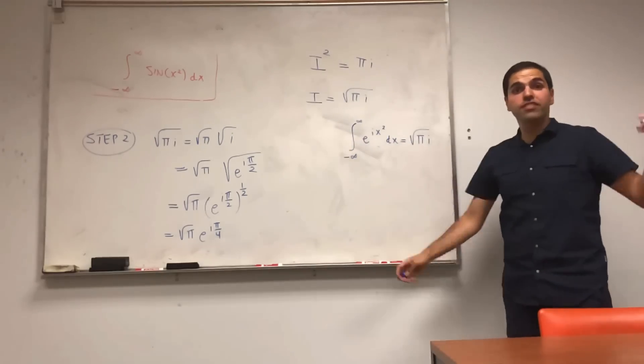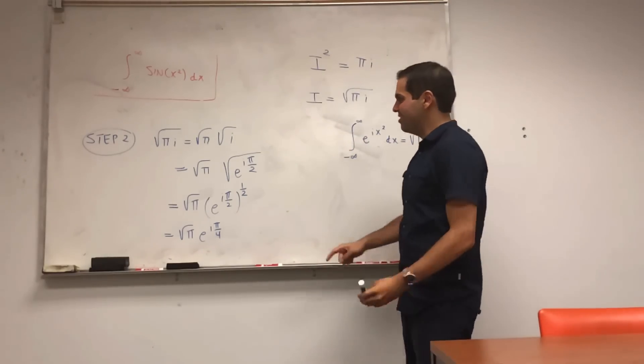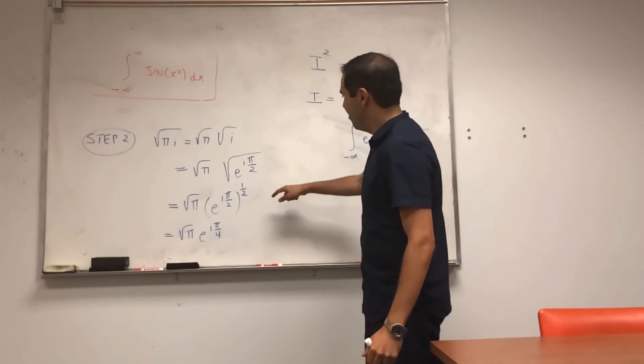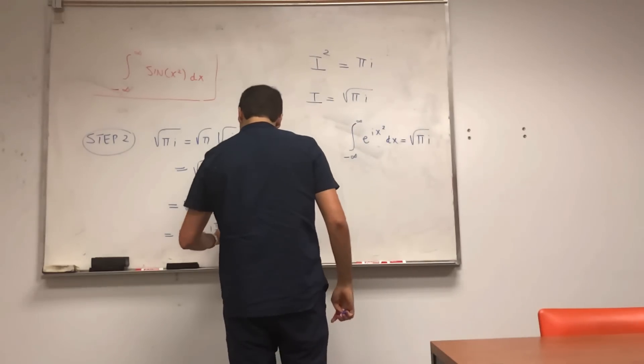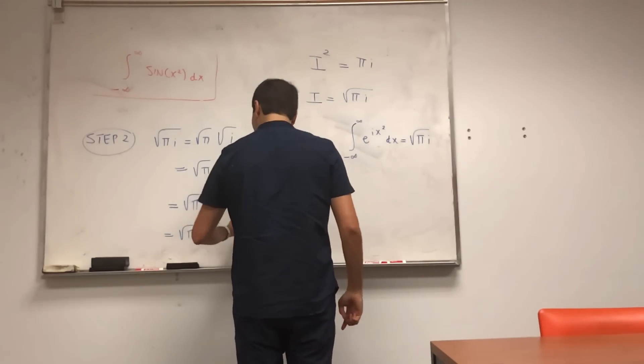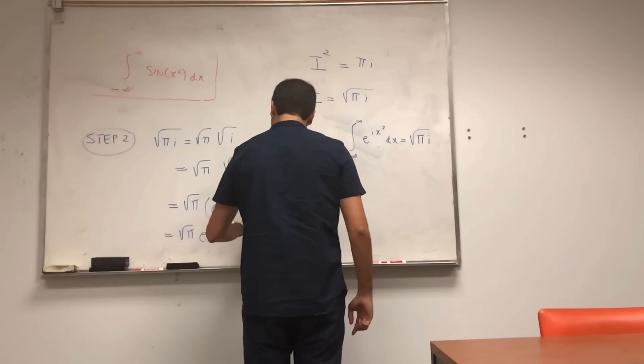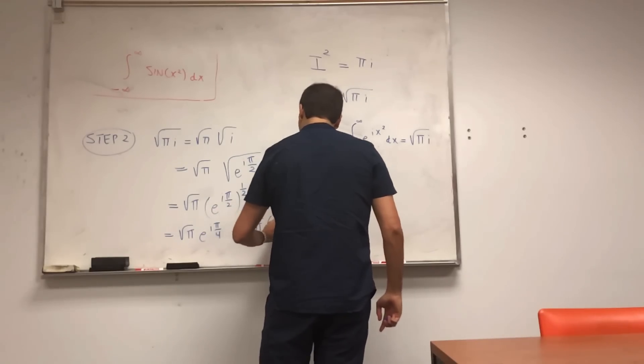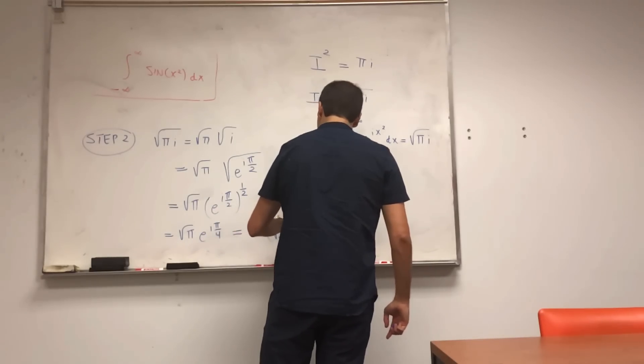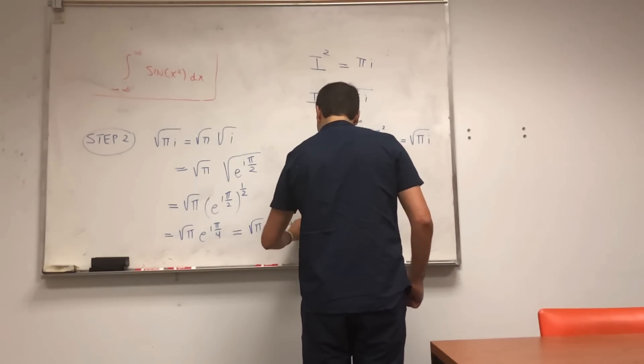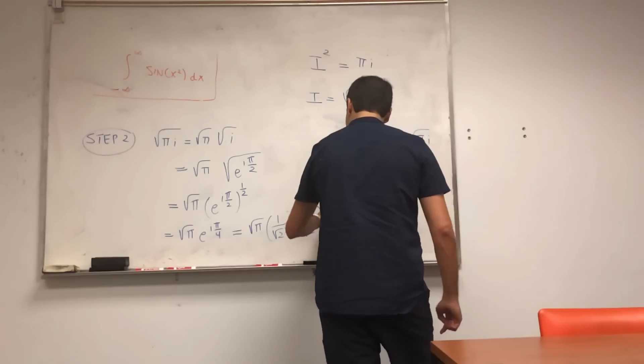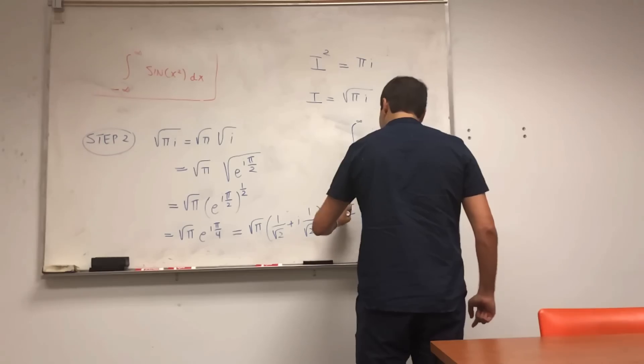And again, I'm taking the principal square root of this, because you could also say, what about e to the i five pi over two. Yeah, that's fine, too. And now let's just rewrite this in terms of real and imaginary part. So it's one over square root of two plus i times one over square root of two. And that's square root of pi over two.